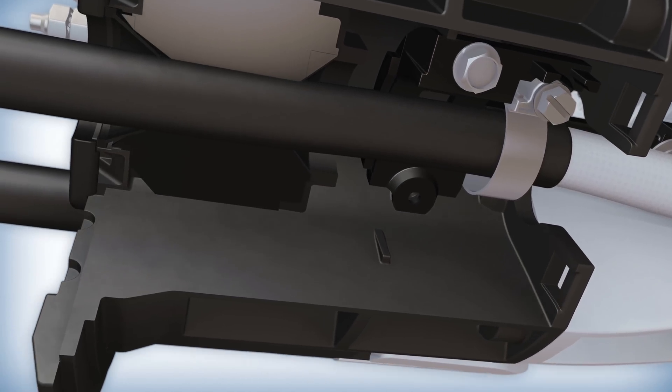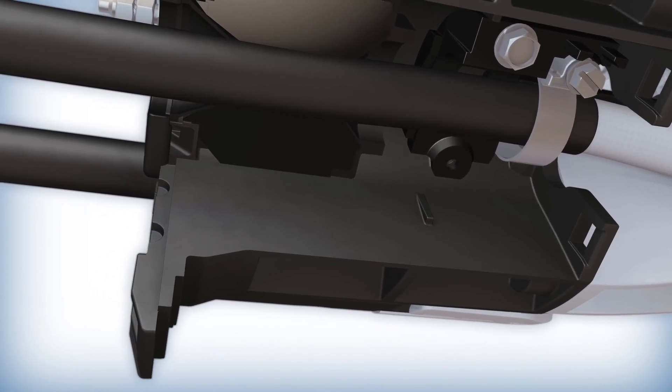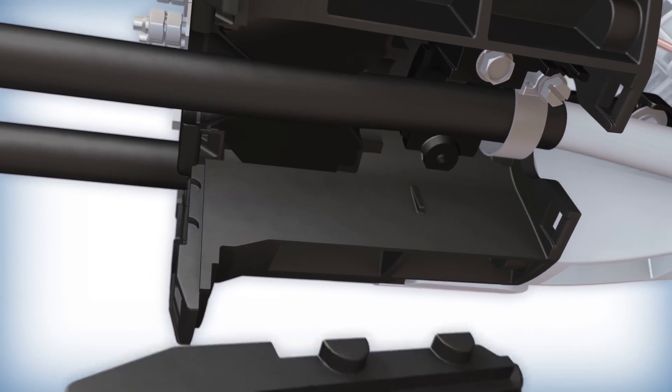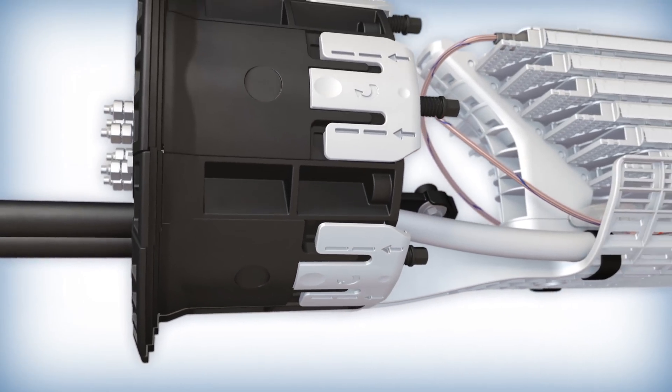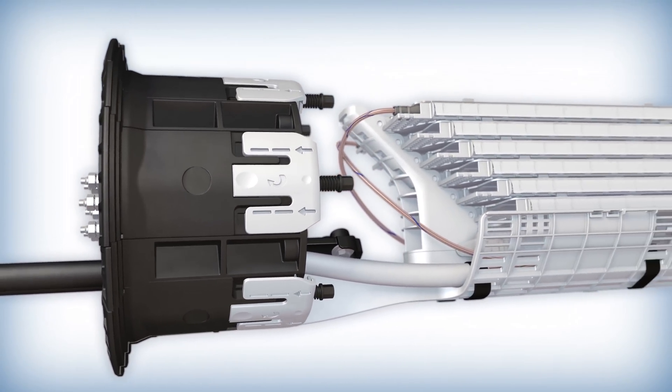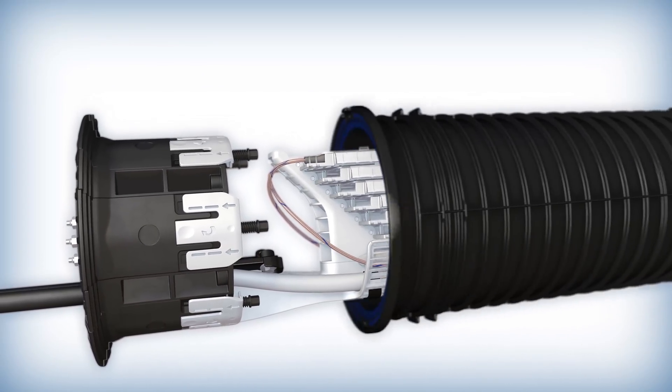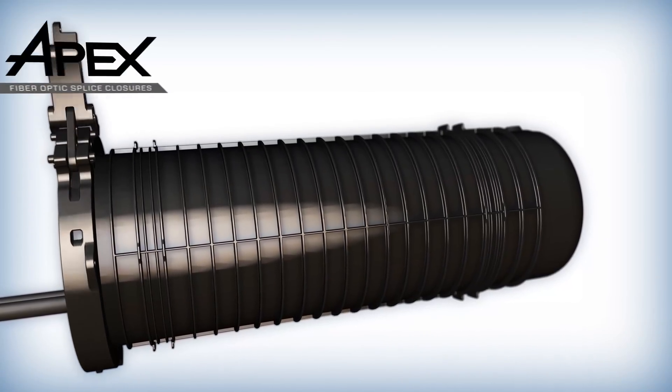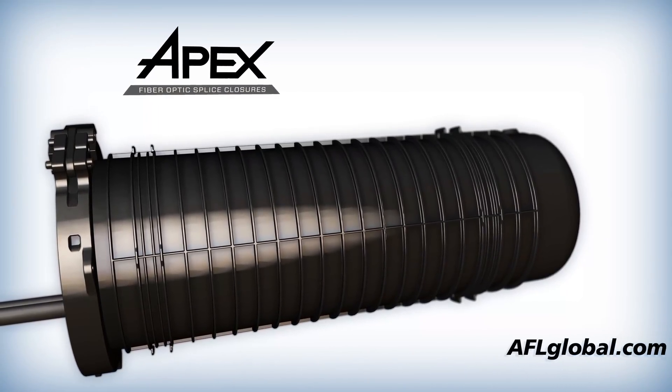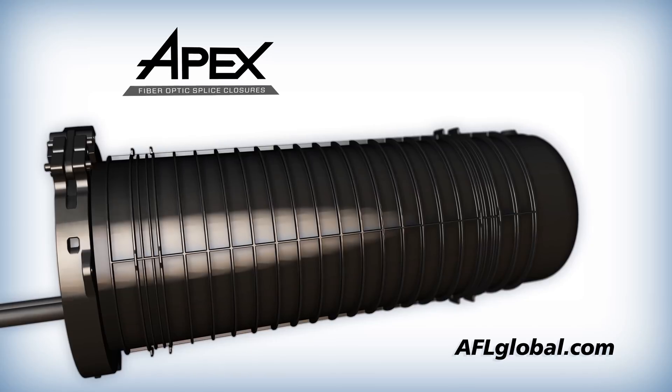AFL's Apex fiber optic closure family provides unique features designed to reduce installation time, improve organization and enhance network reliability. All with optimal splice density, especially when coupled with AFL's wrapping tube cable. Learn more about Apex fiber optic closures by contacting AFL today.